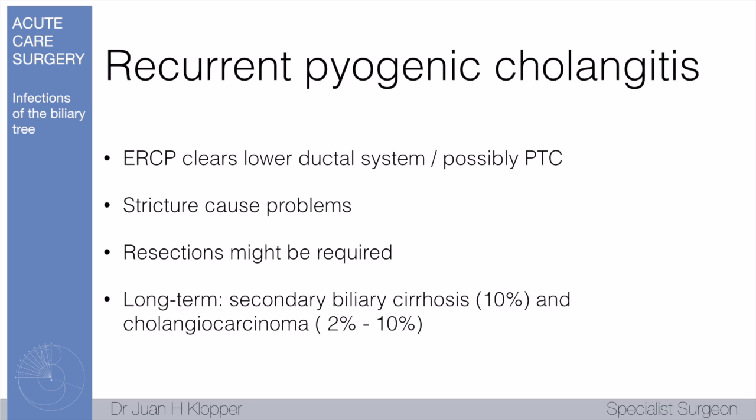In summary for acute cholangitis: fluid resuscitate the patient, start broad spectrum antibiotics after getting blood cultures, and get your imaging. You will see the obstructive pattern on liver function tests. Remember the Tokyo Guidelines for diagnosis. On ultrasound you will see dilatation; a CT scan gives better definition and shows other causes. The patient needs drainage, and after recovery from drainage a cholecystectomy should be performed.